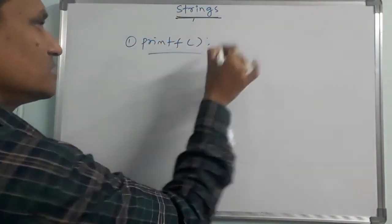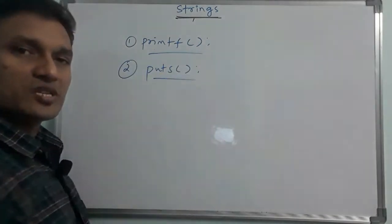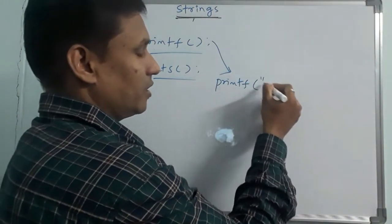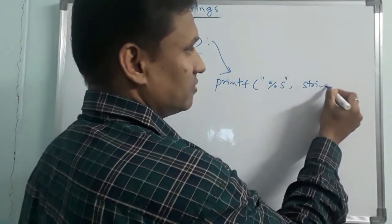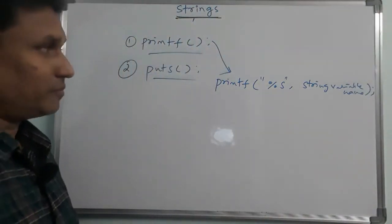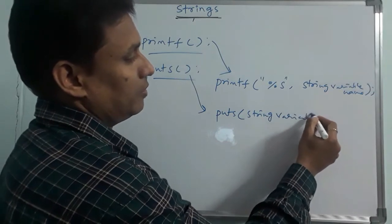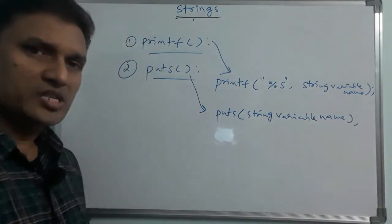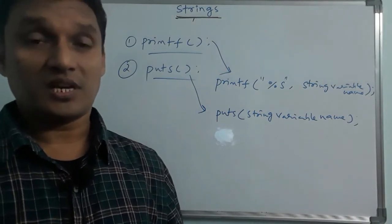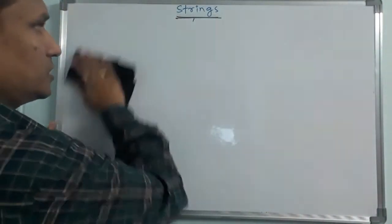To display or print a string, we use the printf function or the puts function. With printf, we write: printf("%s", string_variable_name). The %s is the format specifier for string output. With a small programming example it will be easy to understand.